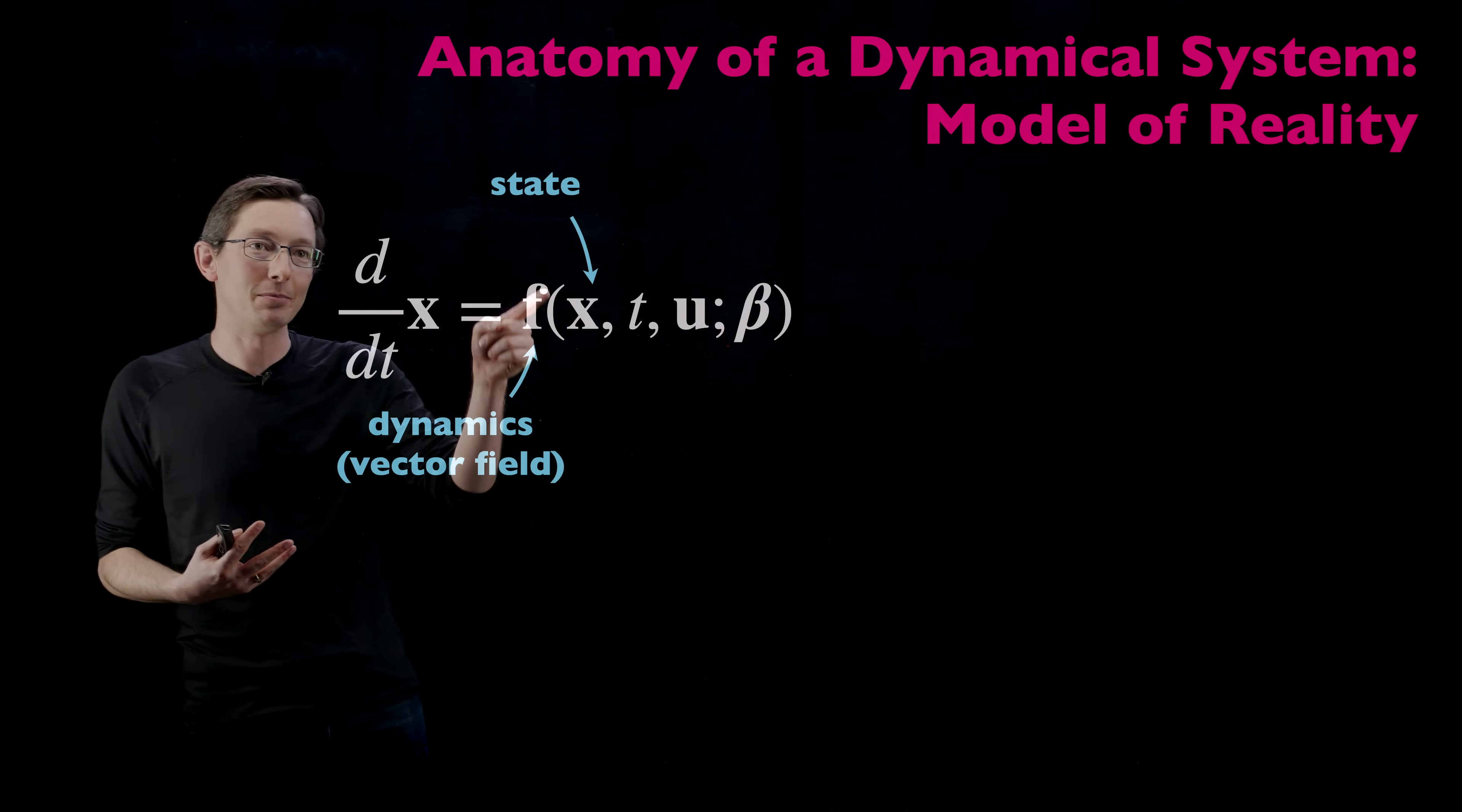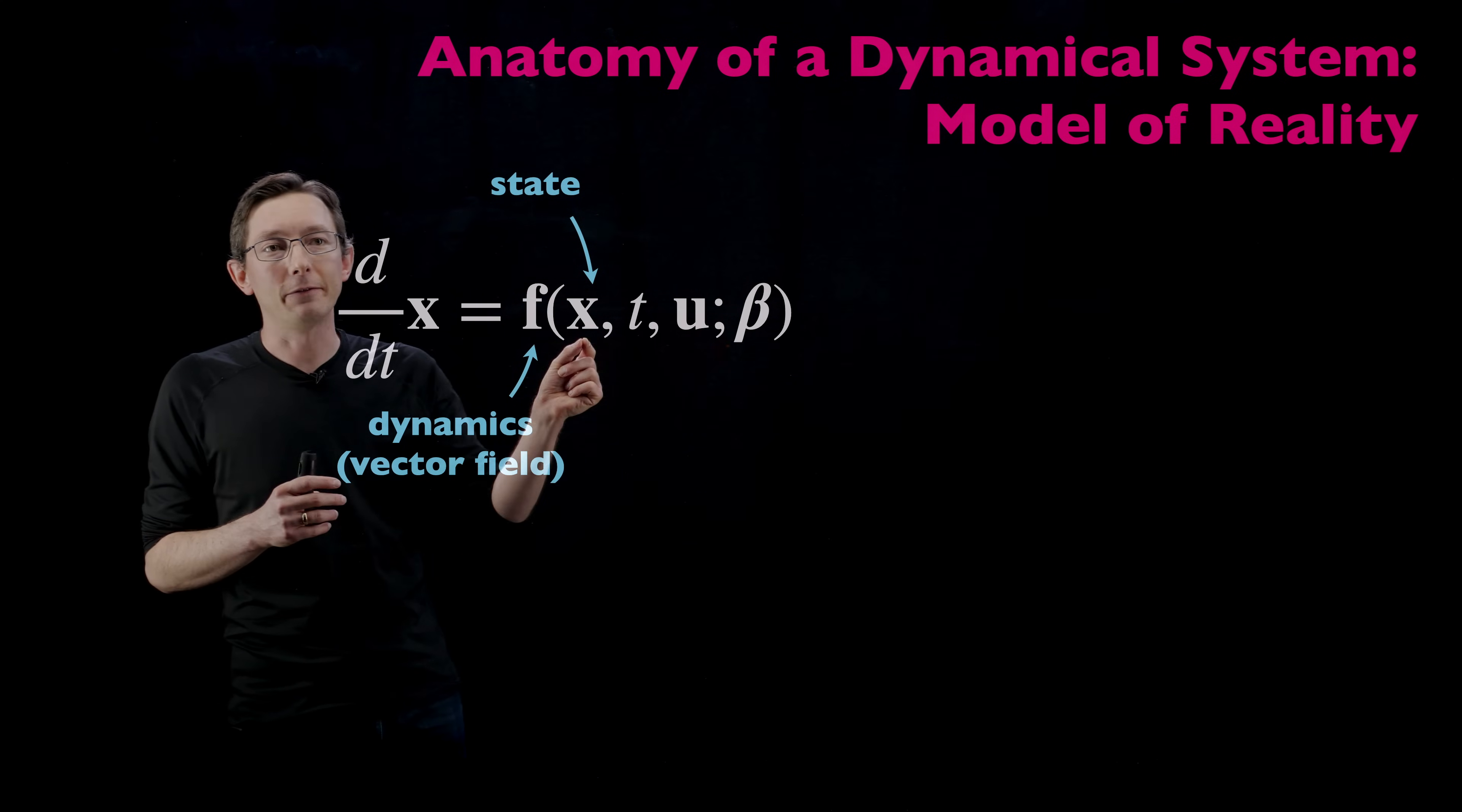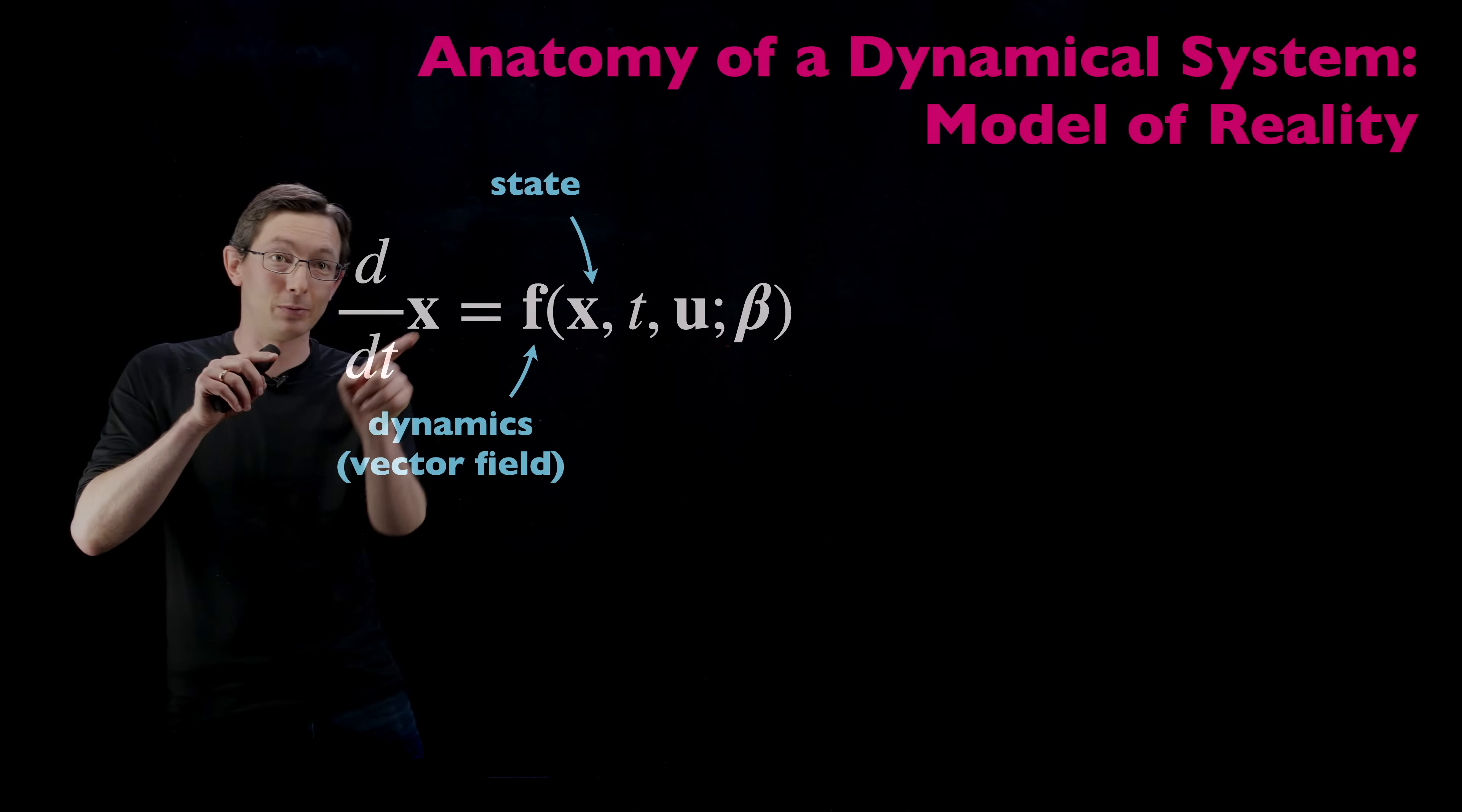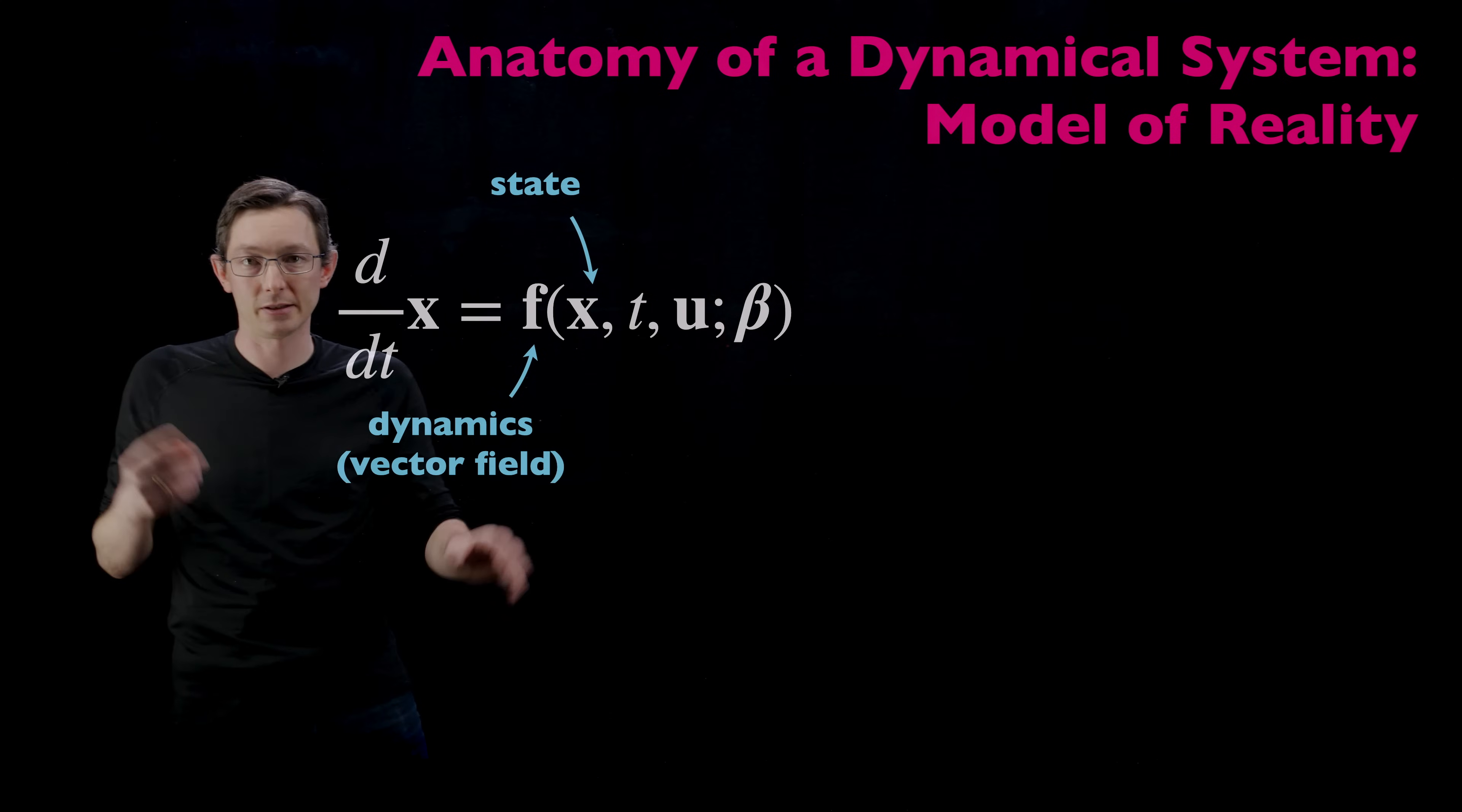Oftentimes this is given by Newton's second law or something like that. And we sometimes say that this is a vector field because for every point in space X, this vector field essentially tells you how the derivative is pointing and what vector direction X dot is pointing at that point in space.